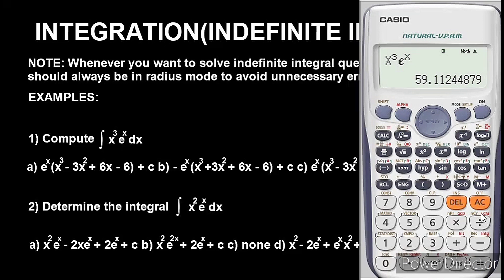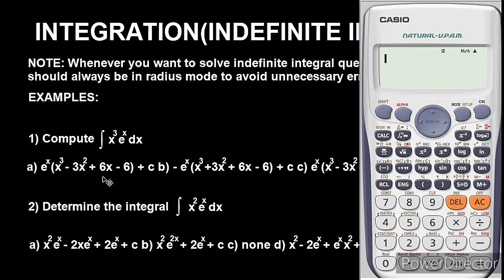Now we are going to differentiate each and every one of the answer options. To break these polynomials down, we differentiate each option, and whichever one gives us 59.11 will be the answer to this question. To differentiate, press Shift then the integral sign button to bring up d/dx.